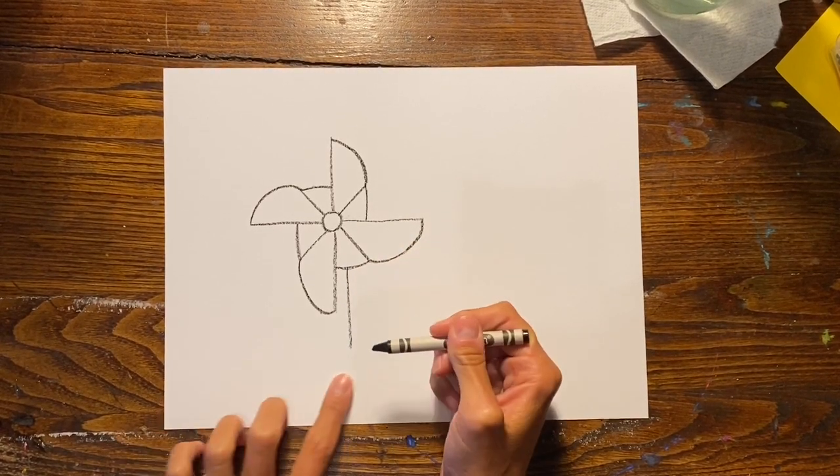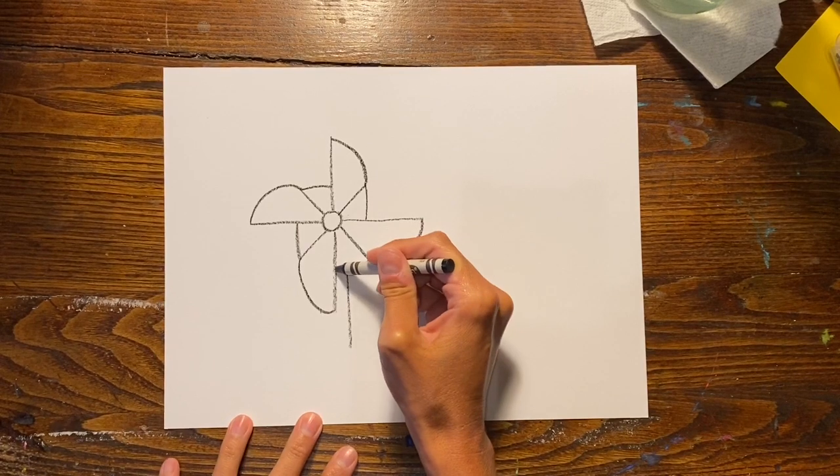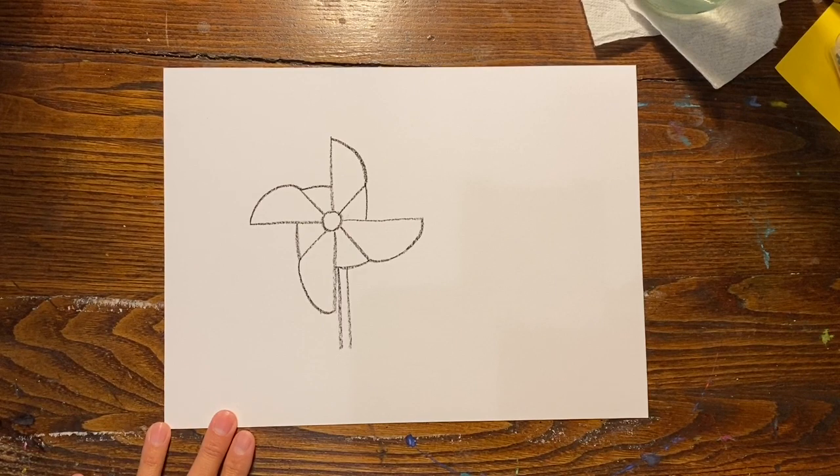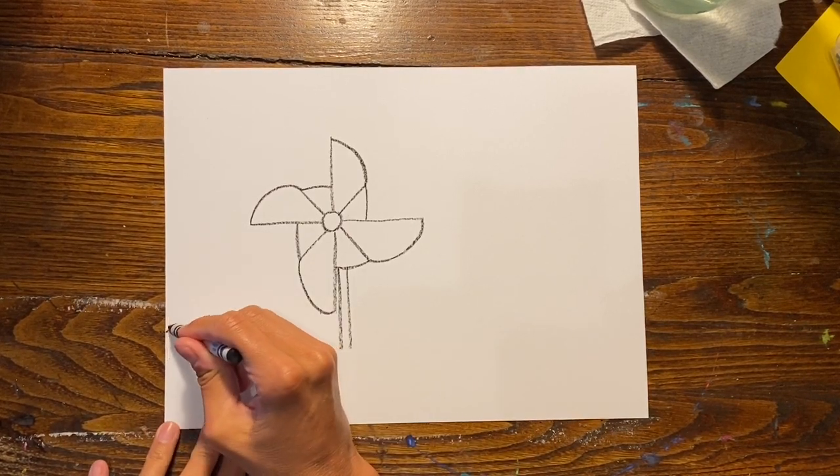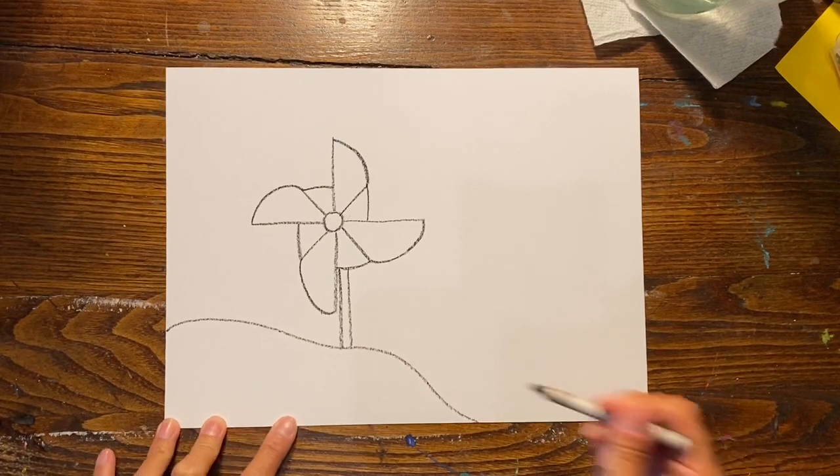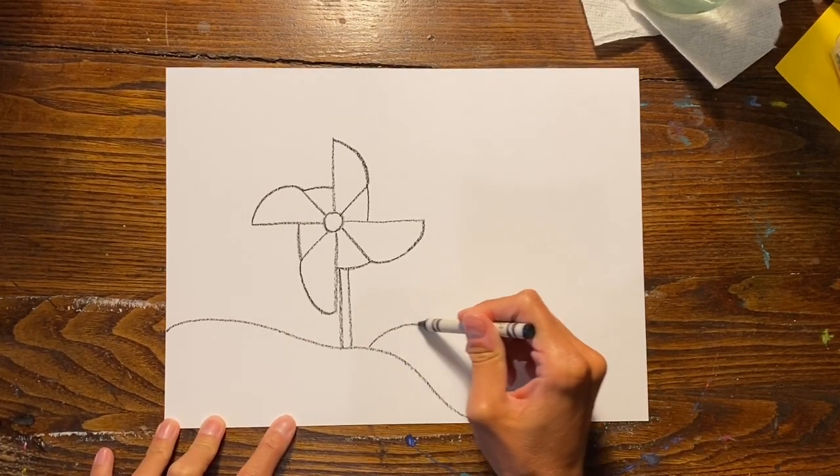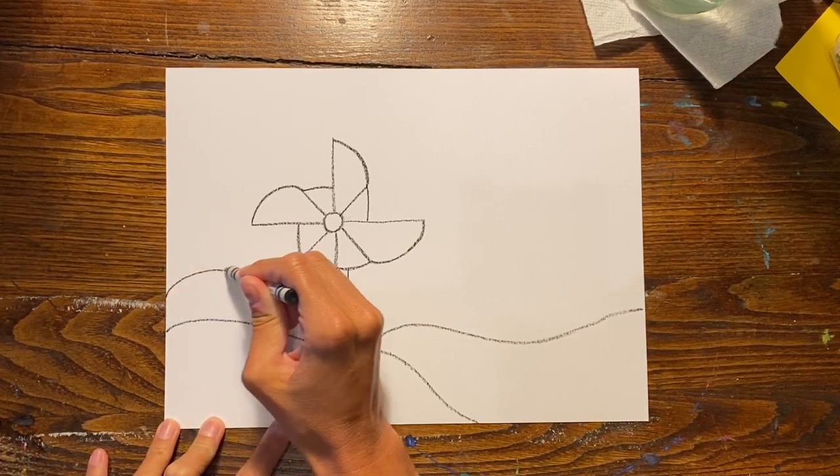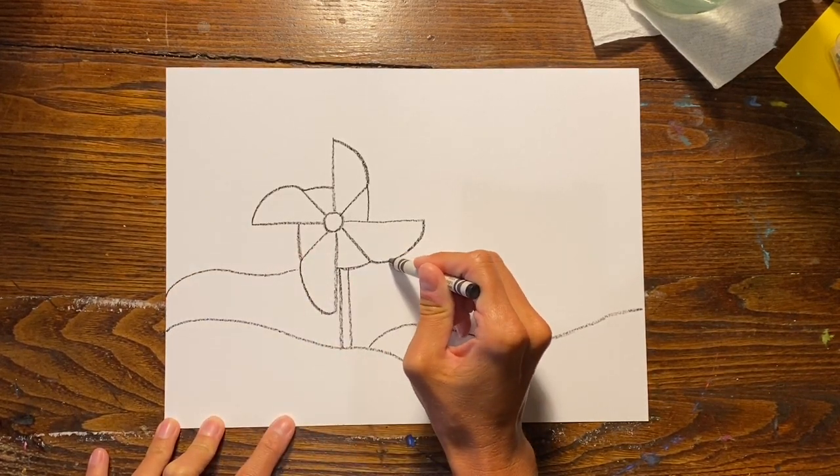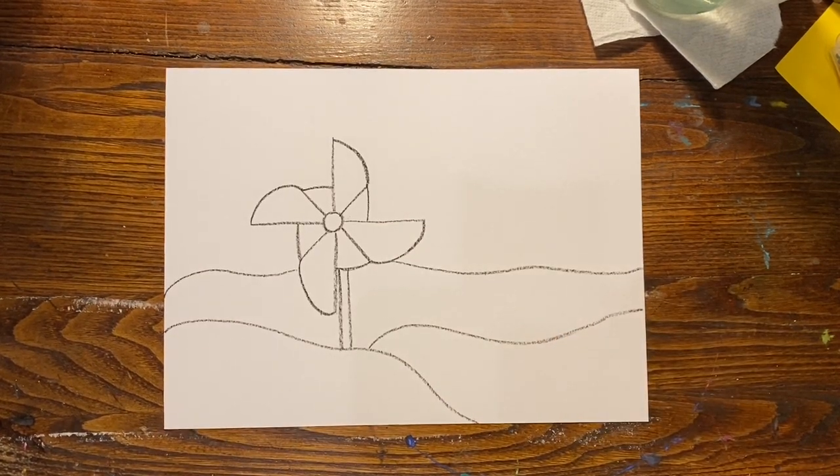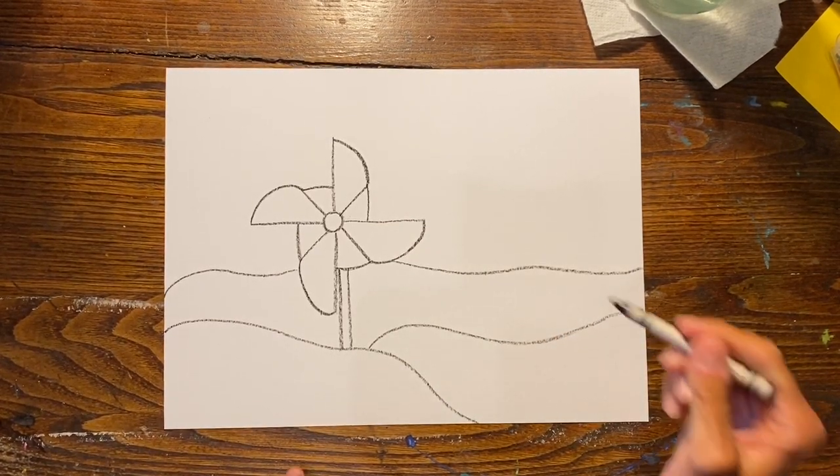Now we need to draw the stick for our pinwheel. I'm going to draw mine going straight down and I'm not going all the way to the bottom of my paper because I am going to draw a landscape. Here is my first part of the landscape. I'm going to start with a curvy hill and I'm going to do another one that overlaps in the back, and I'm working from foreground to middle ground to background. After I draw the hills I'm going to add some mountains to my landscape.